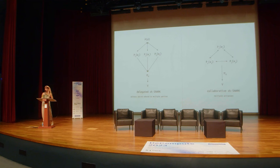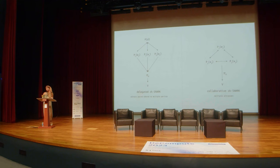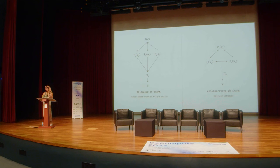In the collaborative ZKSNARK, no single party has the full witness; instead, this is basically an MPC that produces a ZKSNARK at the end. The difference between these two variants is that in the former you can assume an honest delegator, whereas in the latter you cannot assume this, and you have to compensate by using a costly preprocessing stage.